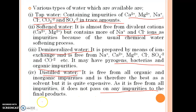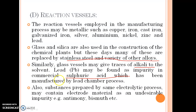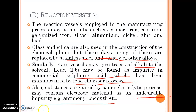Distilled water does not pass on any impurities to the final products. Reaction vessels employed in the manufacturing process may be metallic such as copper, iron, cast iron, galvanized iron, silver, aluminum, nickel, zinc and lead. Glass and silica are also used, but these days many are replaced by stainless steel and other alloys. Glass vessels may give traces of alkali to the solvent. Lead may be found as an impurity in commercial sulphuric acid manufactured by the lead chamber process. Substances prepared by electrolytic processes may contain electrode material as an undesirable impurity, for example antimony or bismuth.